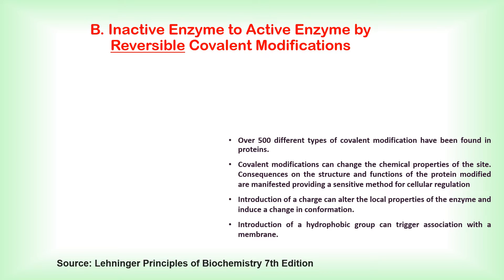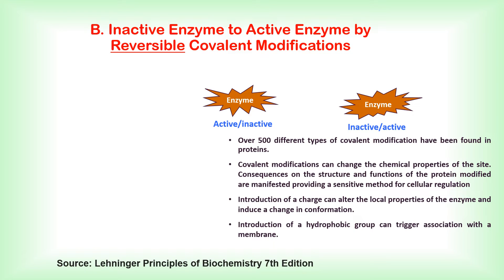Certain enzymes exist in active and inactive forms that are interconvertible depending on the needs of the body. This interconversion is brought about by reversible covalent modifications of one or more amino acid residues in the enzyme molecule. Over 500 different types of covalent modifications have been found in proteins, and they can change the chemical properties of the active site, providing a sensitive method for cellular regulation.